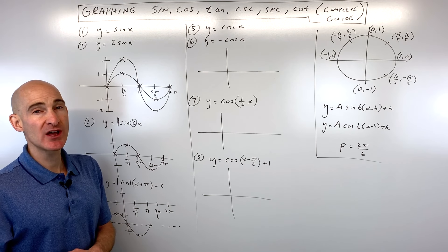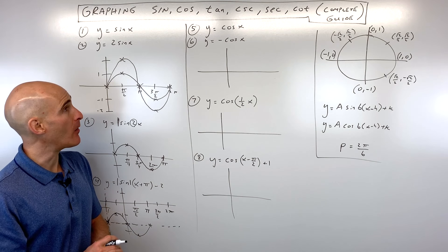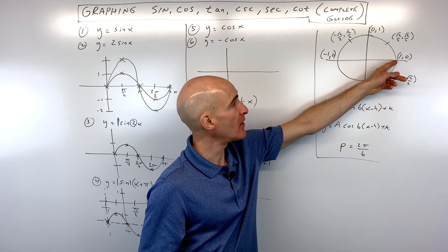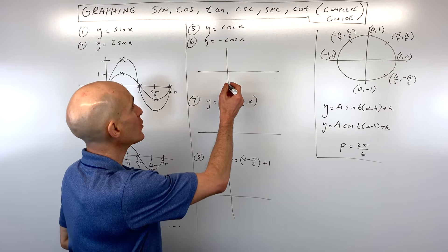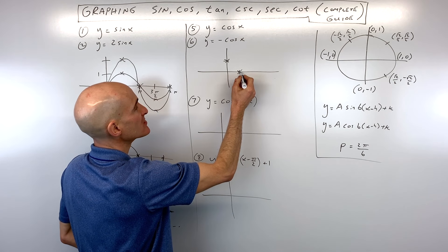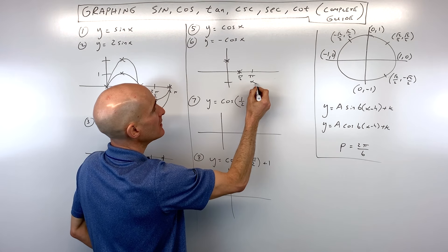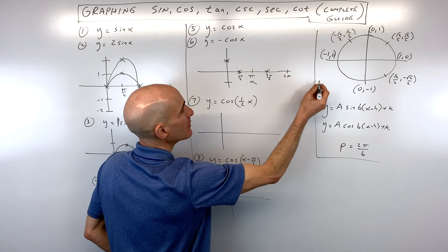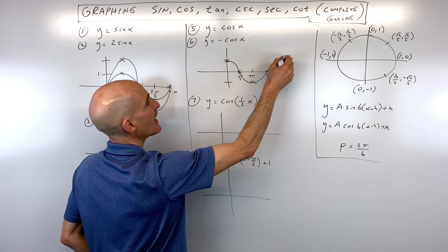Now let's talk about cosine. We're going to get into more challenging examples involving amplitude, period, phase shift, and vertical shift. When we talk about cosine, we look at the x-coordinates on the unit circle. Cosine of zero degrees is going to be one, so cosine starts at one. At pi over two the x-coordinate is zero. At pi the cosine is negative one. At three pi over two the x-coordinate is zero. And at two pi you're back to one. So the basic cosine graph starts at the maximum, goes to the midline, down to the minimum, back to the midline, and back up to the maximum.